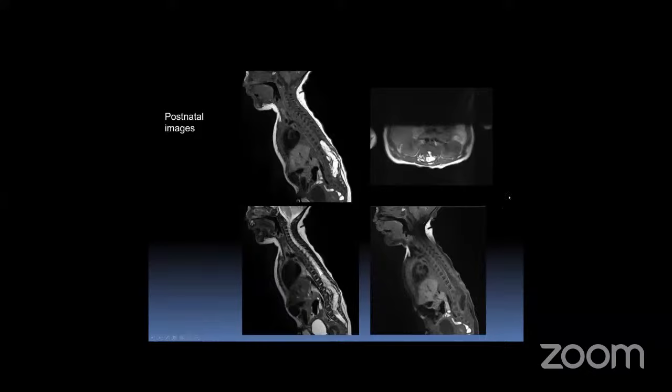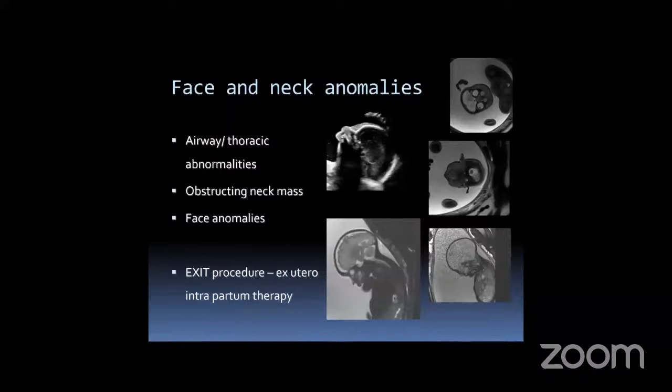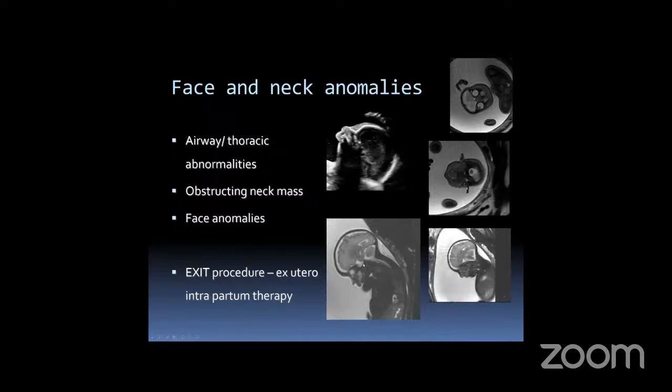Face and neck anomalies are an important indication for fetal MRI because these patients may need an EXIT procedure — ex-utero intrapartum therapy — where the baby is delivered but left on placental circulation while the airway is established. MRI can demonstrate fetal swallowing, normal tongue location, and airway structures that are not well defined on ultrasound due to shadowing from surrounding bones.